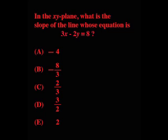In the xy plane, what is the slope of the line whose equation is 3x minus 2y equals 8? We've got five choices: negative 4, negative 8 thirds, 2 thirds, 3 halves, or 2.